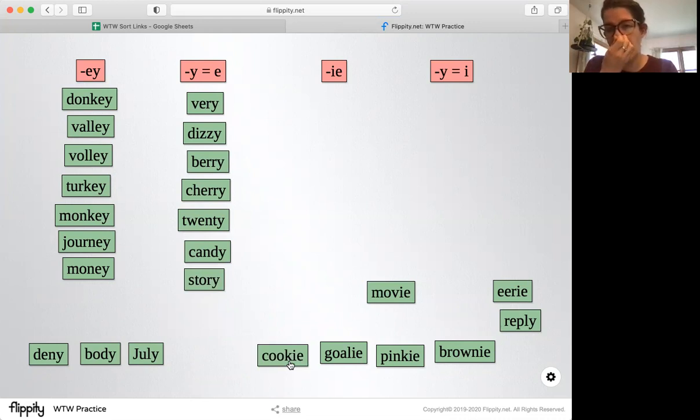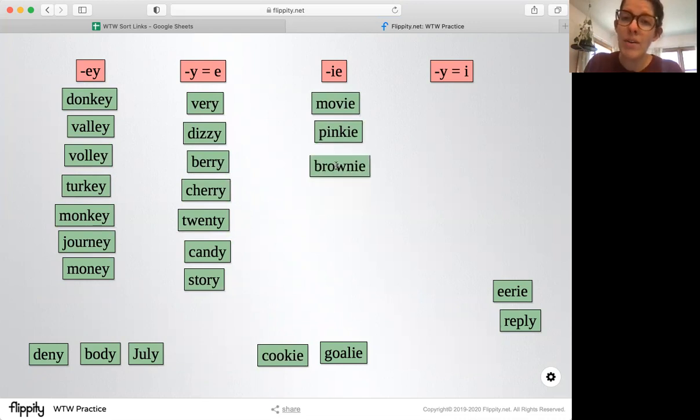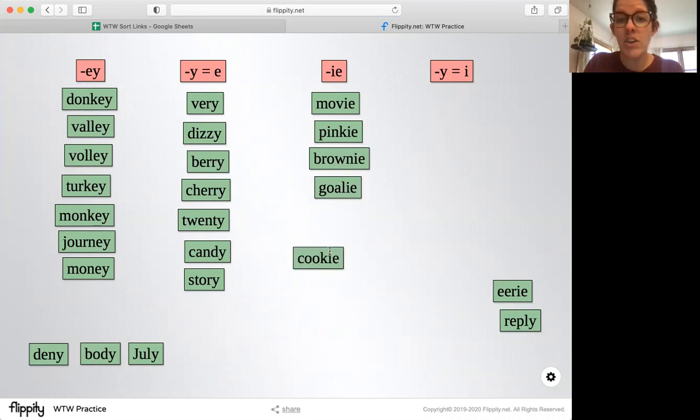When our words end in ie, it also makes an e sound like movie, and pinky, and brownie, and goalie, and cookie, eerie.